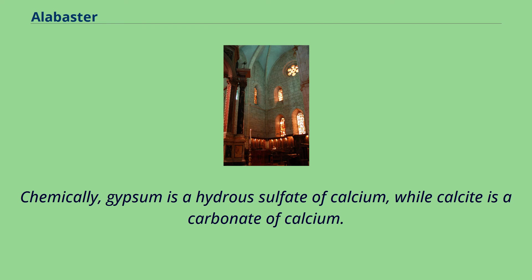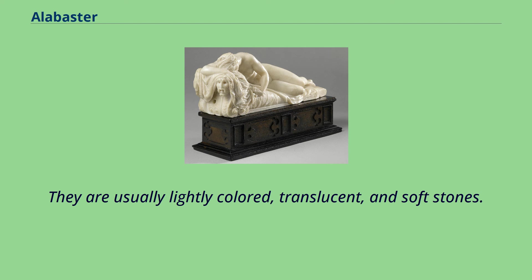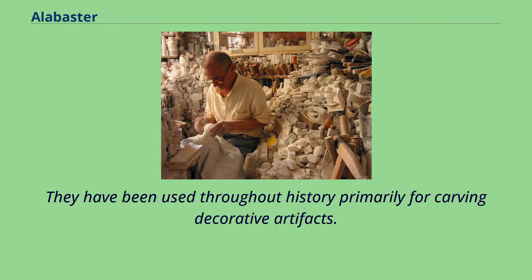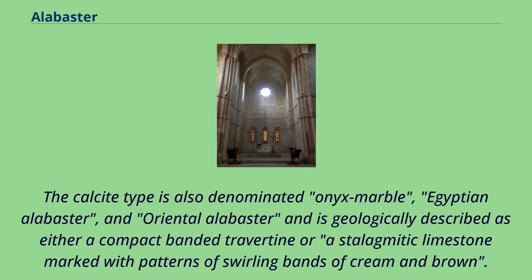Chemically, gypsum is a hydrous sulfate of calcium, while calcite is a carbonate of calcium. The two types of alabaster have similar properties. They are usually lightly colored, translucent, and soft stones. They have been used throughout history primarily for carving decorative artifacts.